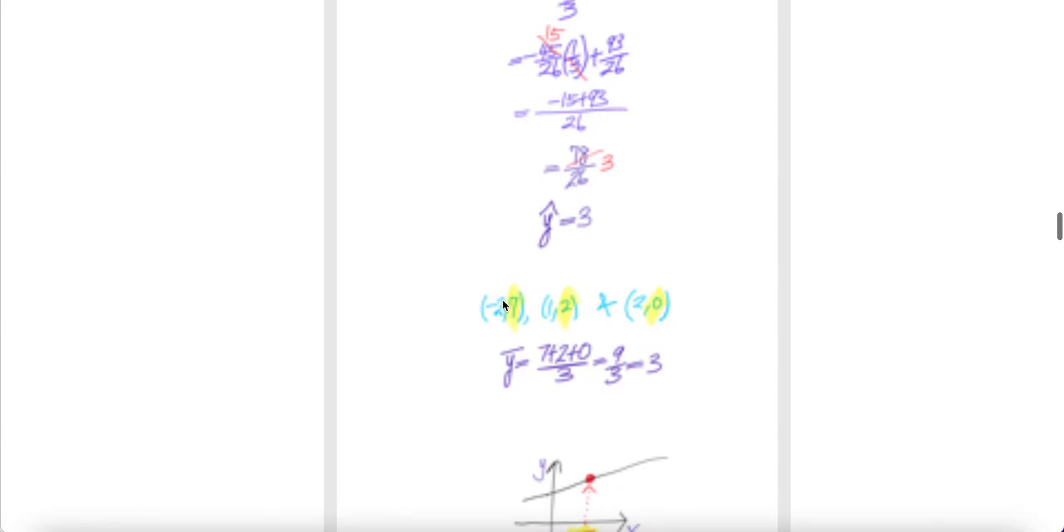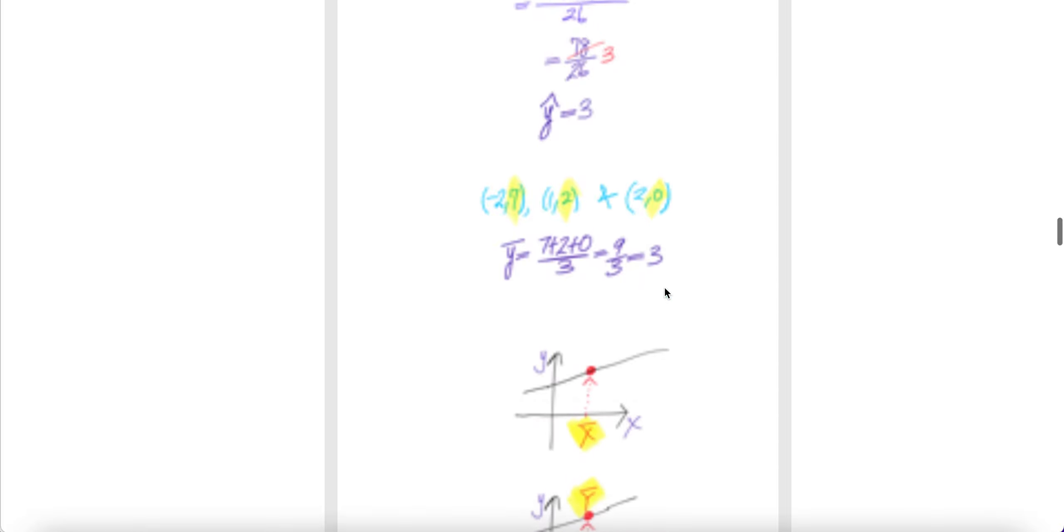Now, look at the three points again, and then pick up the y coordinate. Compute the bar y, you get three. Seven plus two plus zero, divide by three, nine divided by three equals three.